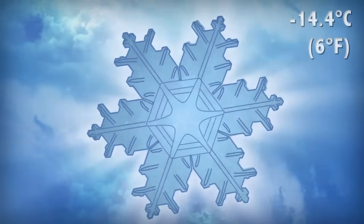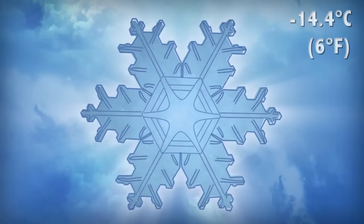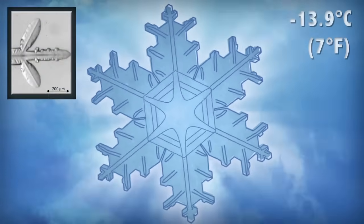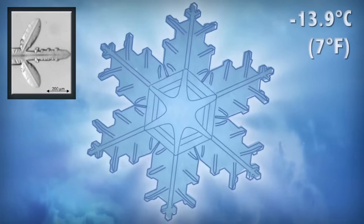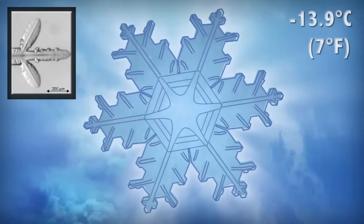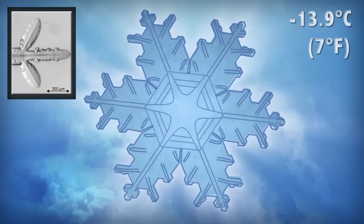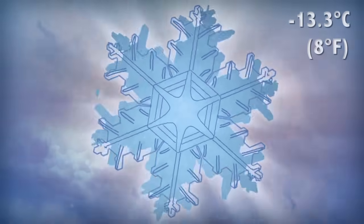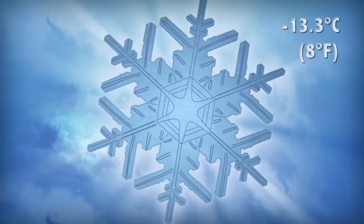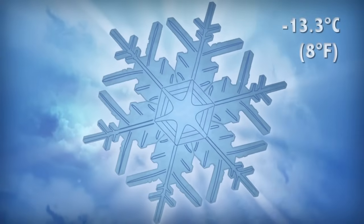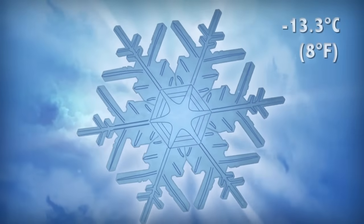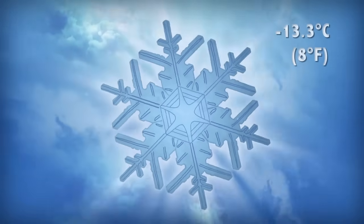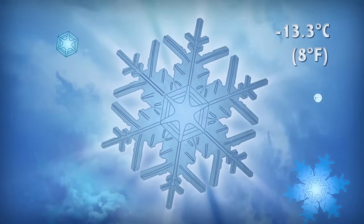The crystal gradually warms, making the tips long and narrow. The crystal encounters even warmer air, which slows the growth and widens the tips. Finally, this unique and delicate structure falls to the Earth along with countless other snowflakes.